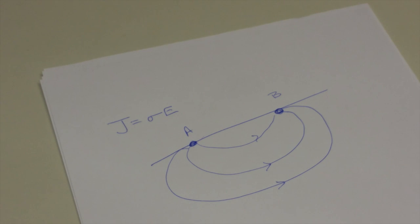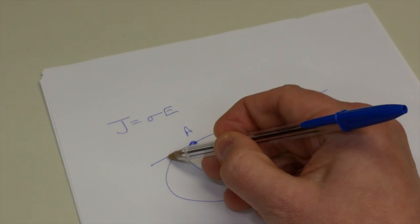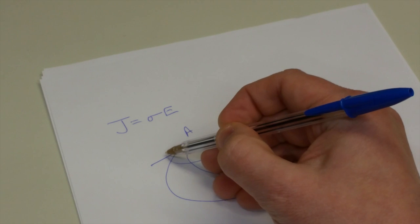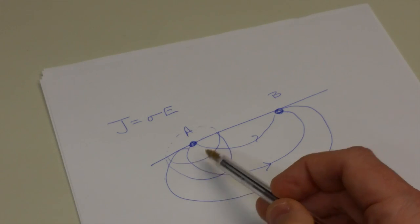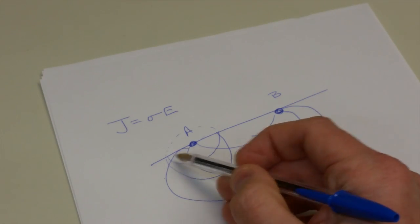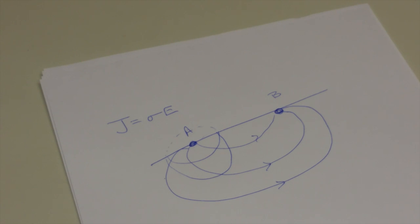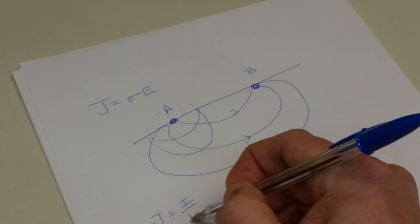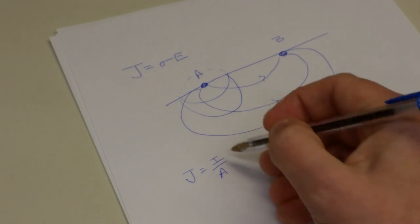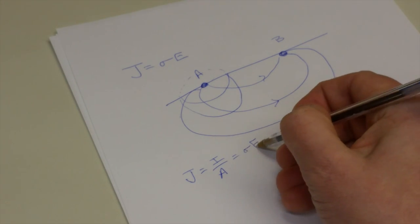What we want to do is figure out all the current flowing out of one electrode or into another electrode. Now, instead of just a simple cross-sectional area, we have to look at the area of a hemisphere. So this is now going to go down into the ground. We know that the surface area of a sphere is 4 pi r squared. So the surface area of a hemisphere is going to be 2 pi r squared. We can write J equals I over A equals sigma E for Ohm's Law.